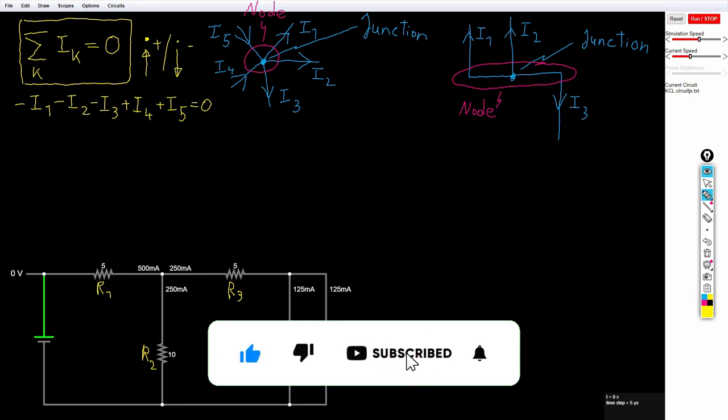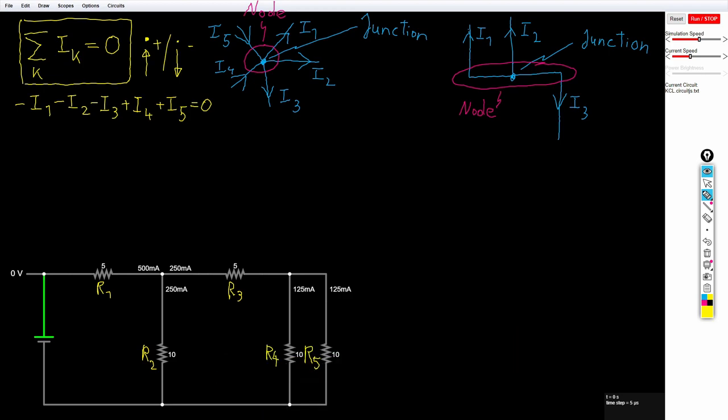We can understand his law in an alternative way. If you draw a circle in your circuit, then the sum of incoming currents equals the sum of outgoing currents.